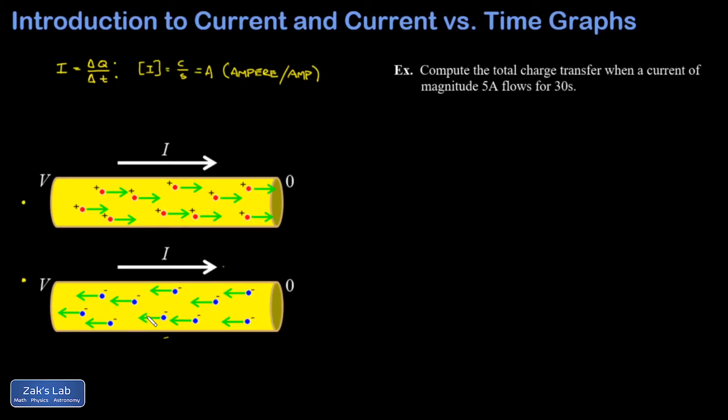It's interesting to note that even for substantial currents, these electron speeds are measured in millimeters per second, so they're remarkably slow. That speed is called the drift velocity of the electrons, and I'll post a link to a video where we derive an expression for drift velocity.